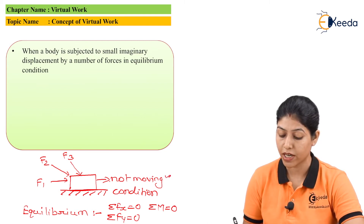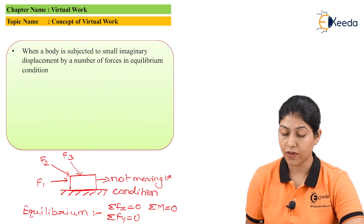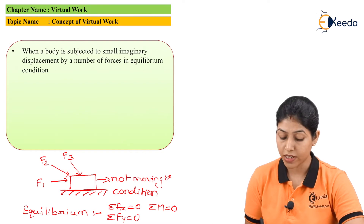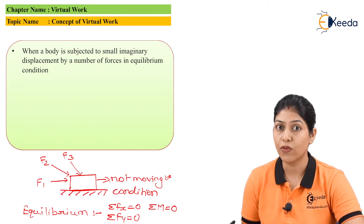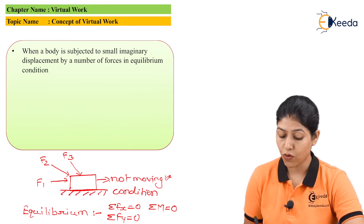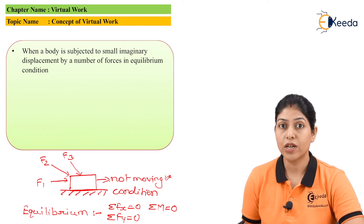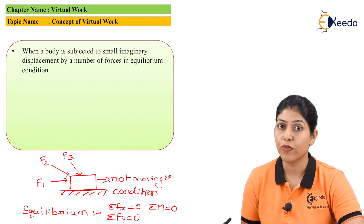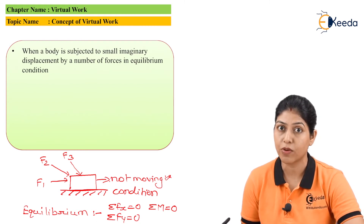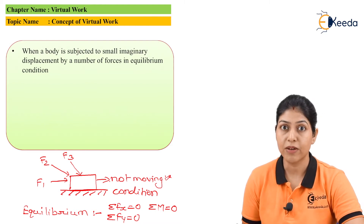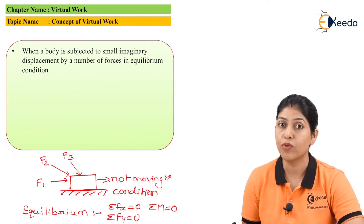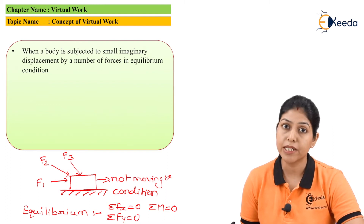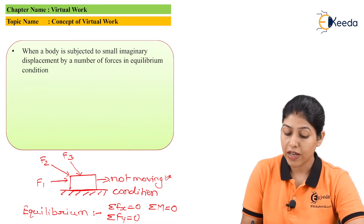If we define the resultant of forces F1, F2, and F3, and this resultant force is equivalent to the friction force acting opposite to the direction of motion, the body is not in a moving condition. So if we want to define the work done by the body when it is not moving — work is generally defined as force into displacement — but if there is no displacement, we define that work as virtual work, where we imagine the displacement of the body.